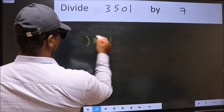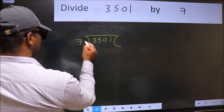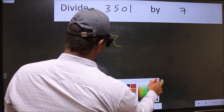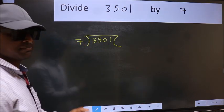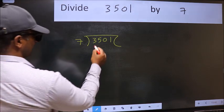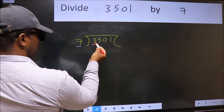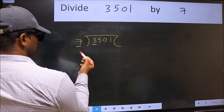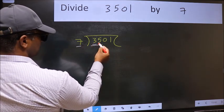3501 and 7 here. This is your step 1. Next, here we have 3 and here 7. 3 is smaller than 7. So we should take two numbers, 35.